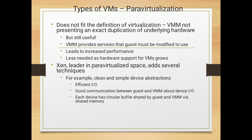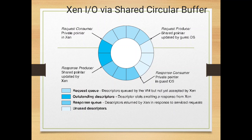Type 2 also supports para-virtualization, which does not fit the strict definition of virtualization since the virtual machine is not presenting an exact duplication of the underlying hardware. The Xen leader in the para-virtualization space adds several techniques: clean and simple device abstraction, efficient I/O, and good communications. Each device has a circular buffer shared by a guest and via shared memory, consisting of a request queue with outstanding descriptors and a response queue with unused descriptors, providing services by OS request.